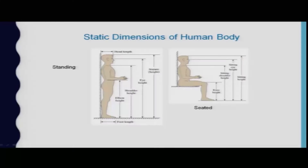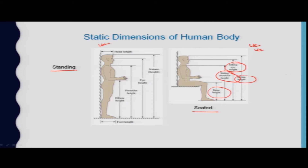The answer involves several dimensions of the human body in a seated condition. In a seated condition, you can think of sitting height, sitting eye height, sitting shoulder height, and knee height. These are basic dimensions to consider while designing an office chair, though many more measurements are required that you need to accumulate for a complete chair design.